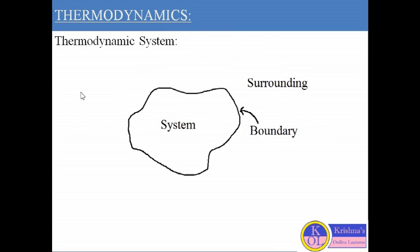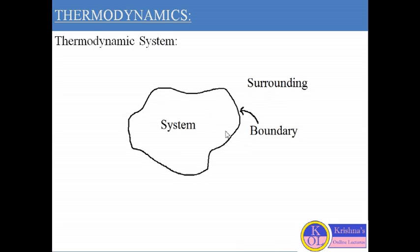A very important term in thermodynamics is the thermodynamic system. A thermodynamic system is defined as a definite quantity of matter in space. This diagram shows the system — a closed or definite quantity of matter in space. The area outside the system is called the surrounding, and the system and surrounding are separated by the boundary. If there is no boundary, or the system and surrounding are combined, it makes the universe. This boundary may be fixed or moving.